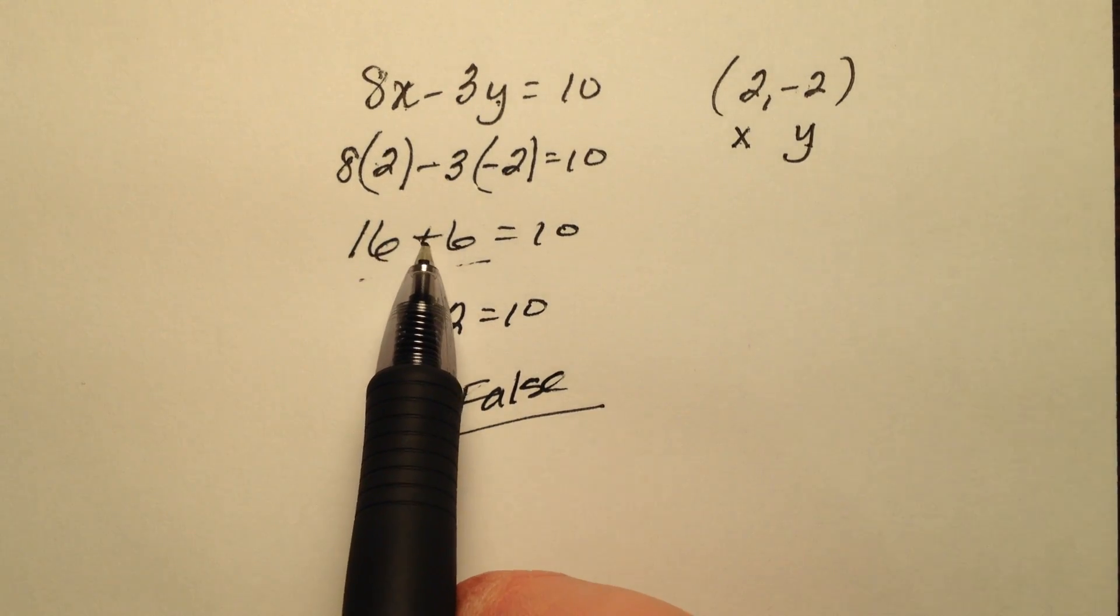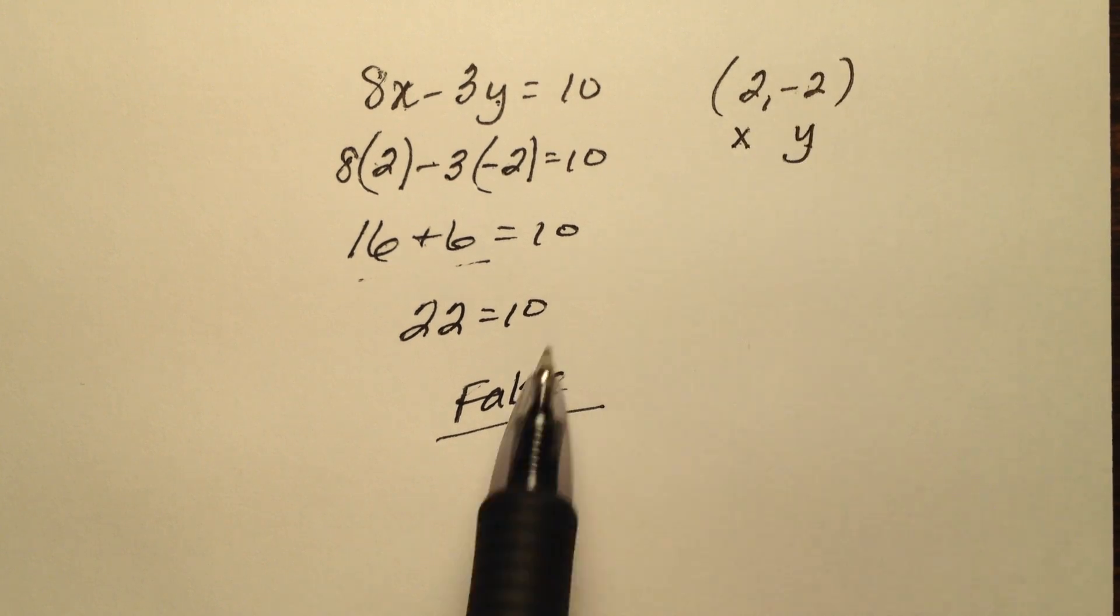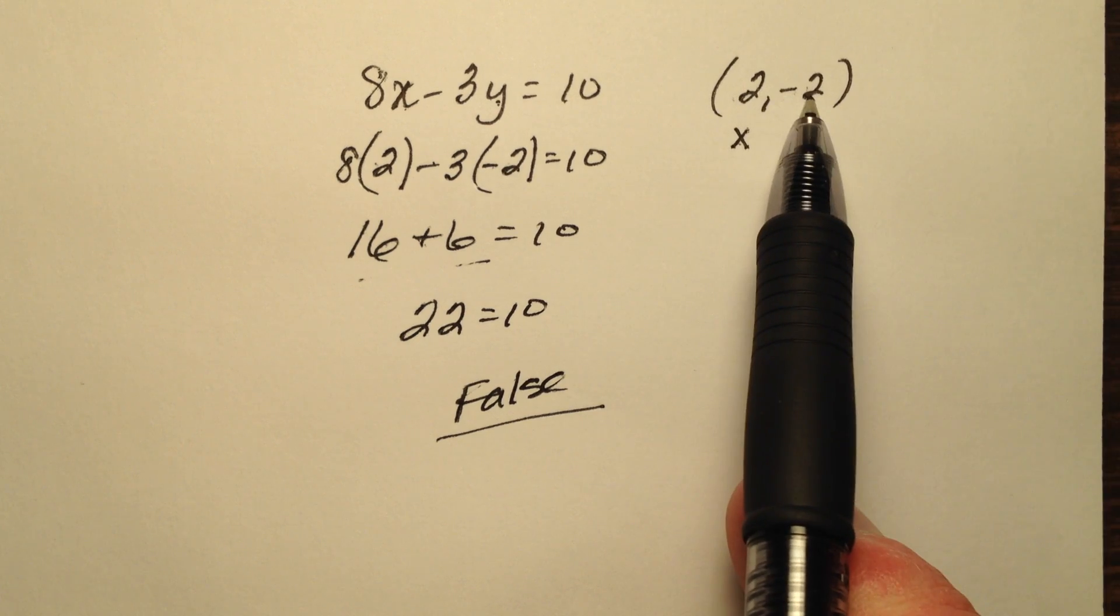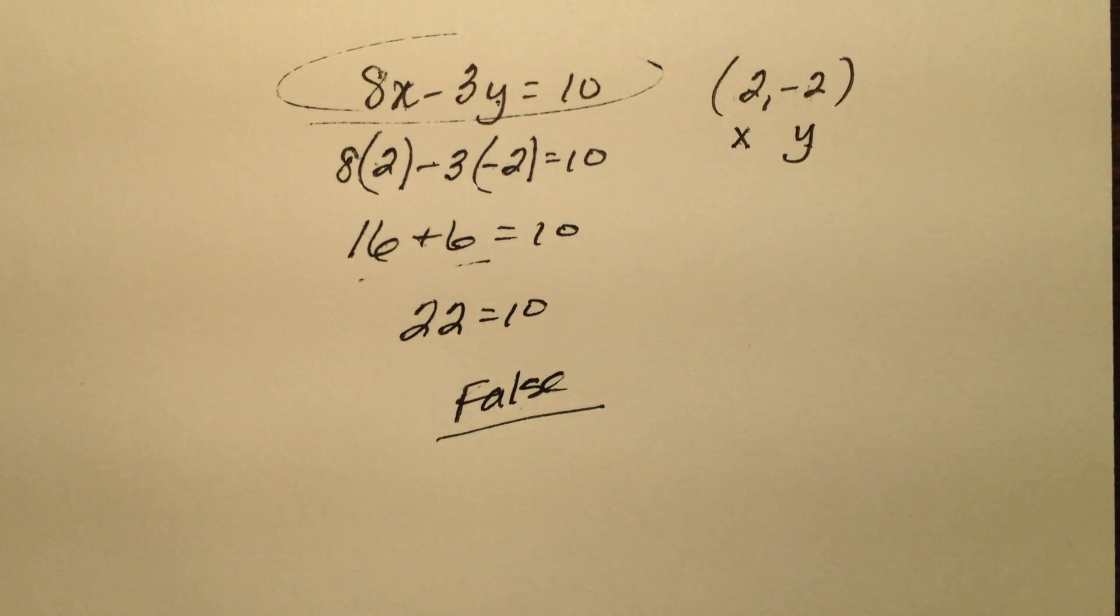If it had been 16 minus 6, that would have been 10. So our ordered pair would have had to be a positive 2, but not the case with this ordered pair. So (2, -2) not a solution to this linear equation in two variables.